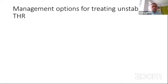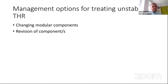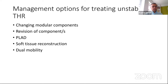Options in the armamentarium for managing unstable hips include: changing modular components; revising components; applying a PLAD (posterior lip augmentation device); soft tissue reconstruction if there is soft tissue disruption; dual mobility; and constrained liner. A simple option is just changing modular components — increasing femoral head size or using a poly lip liner for the acetabular component — both of which help improve stability of the hip joint.